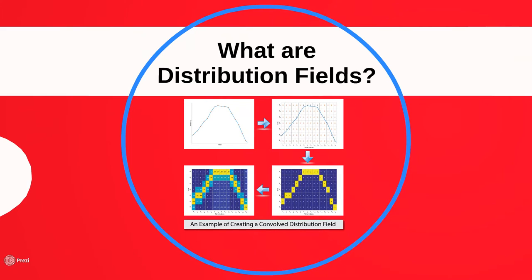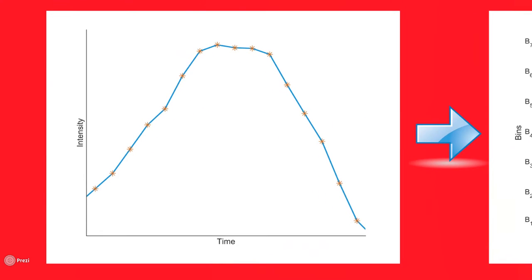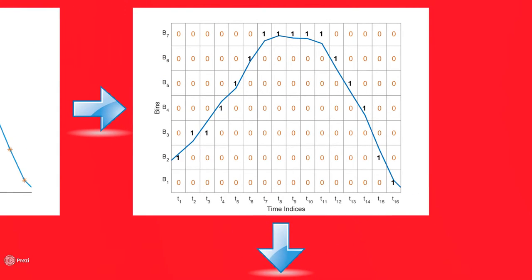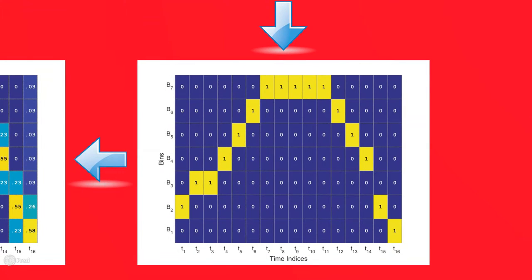Distribution fields are matrices where every entry is between zero and one inclusive. For example, given a curve that is discretely sampled over time, we partition the time-space into bins of different amplitudes, where one would represent the probability of the curve falling into that bin and zero otherwise. For ease of visualization, we have applied a color mapping to the distribution field where yellow represents a probability of one and blue represents a probability of zero.